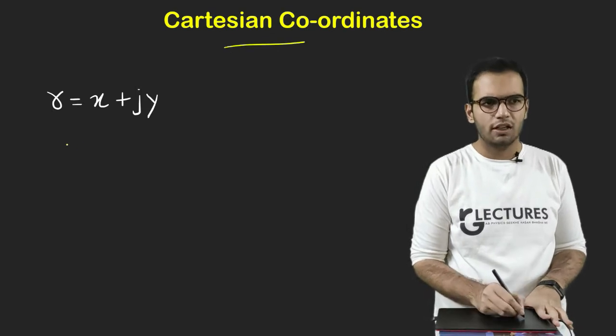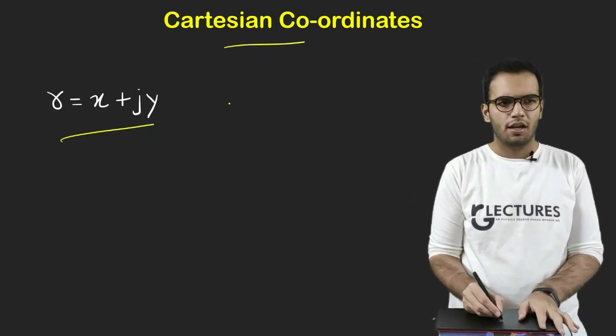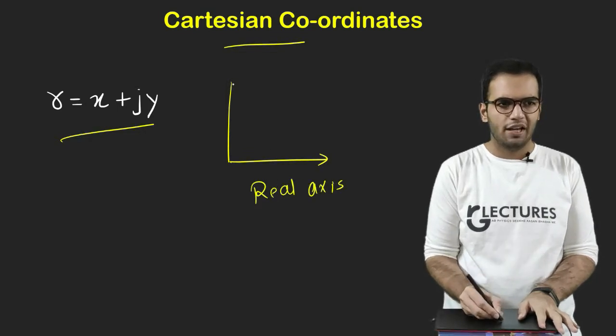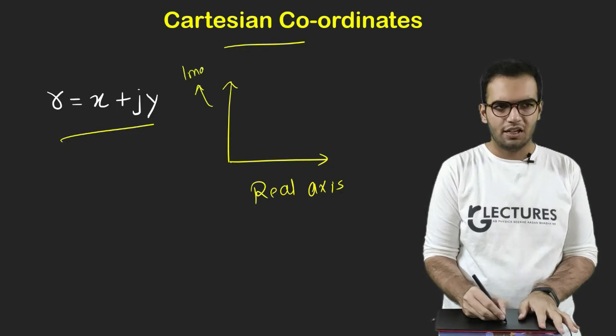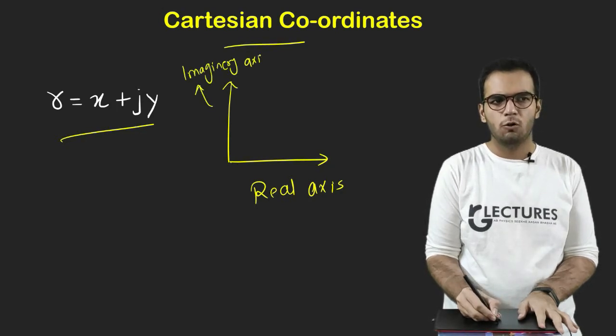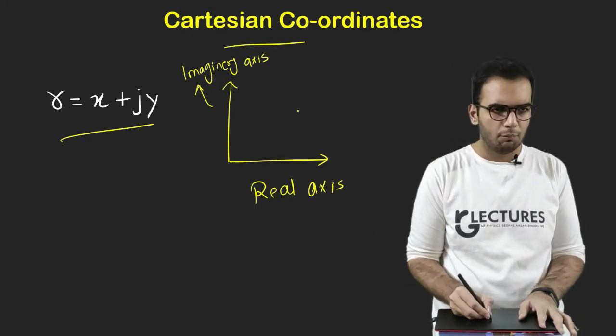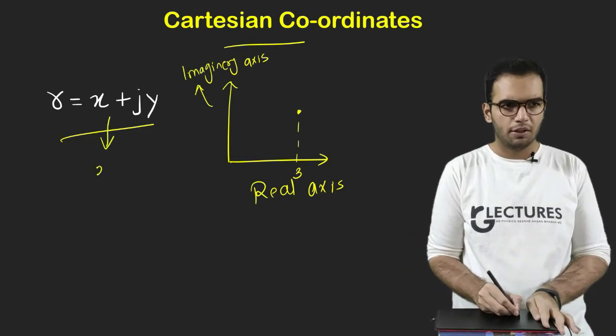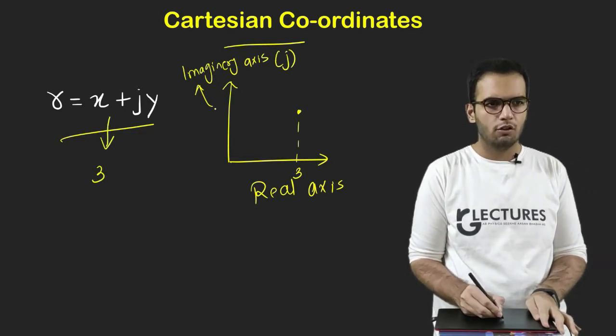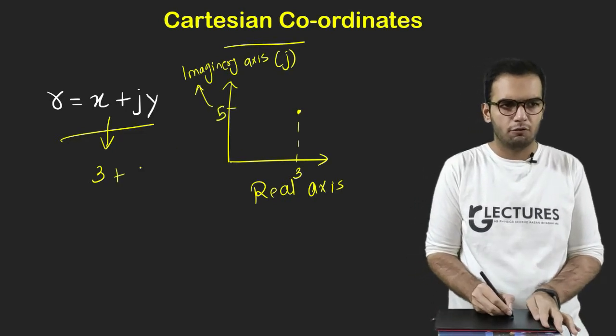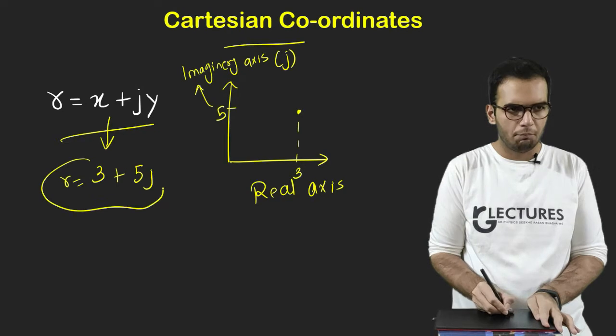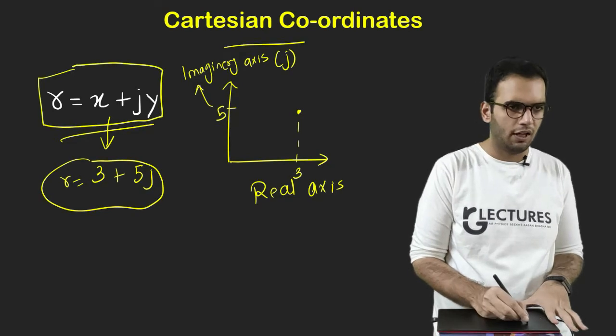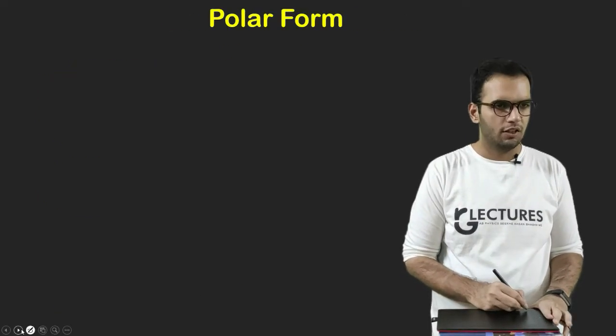So let's start. So first of all, let us discuss the Cartesian coordinates. So in Cartesian system, X axis is considered to be real axis and Y axis is considered to be imaginary axis. So suppose I want to locate a point. So a point will be located - suppose here is the point. So it will be suppose 3 in X axis, so X here will be 3. And imaginary axis has the J unit. So suppose it is 5 here, so it will be 3 plus 5J. So this is the way complex number works in the Cartesian form. R equals X plus JY. You have to remember the standard form.